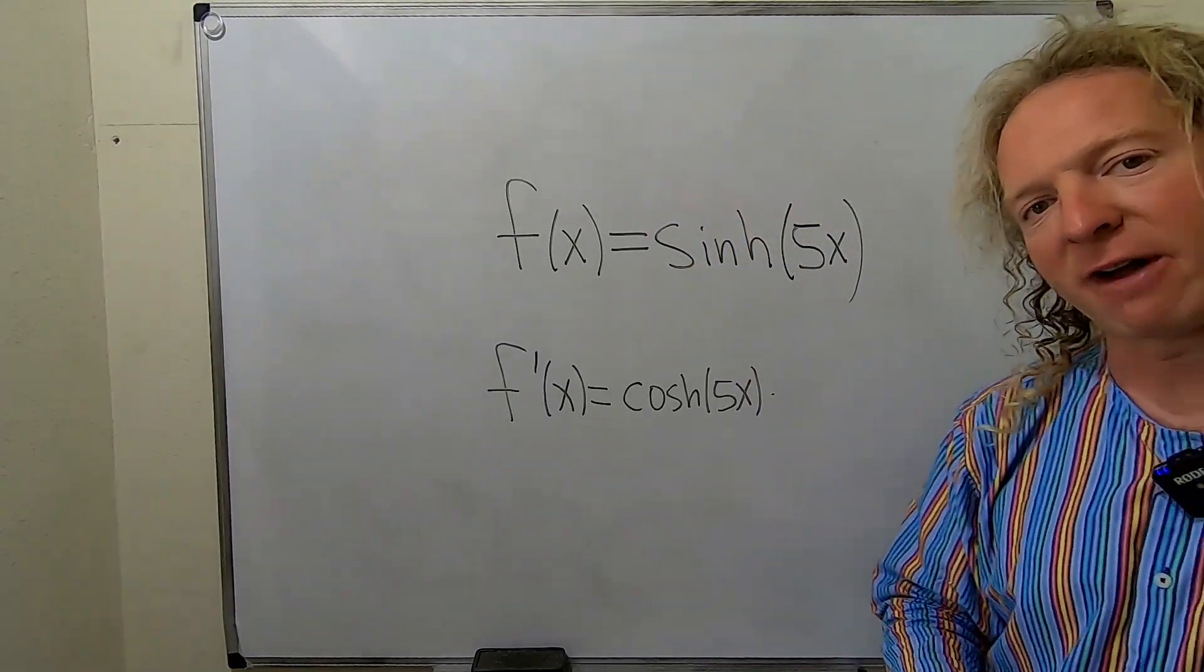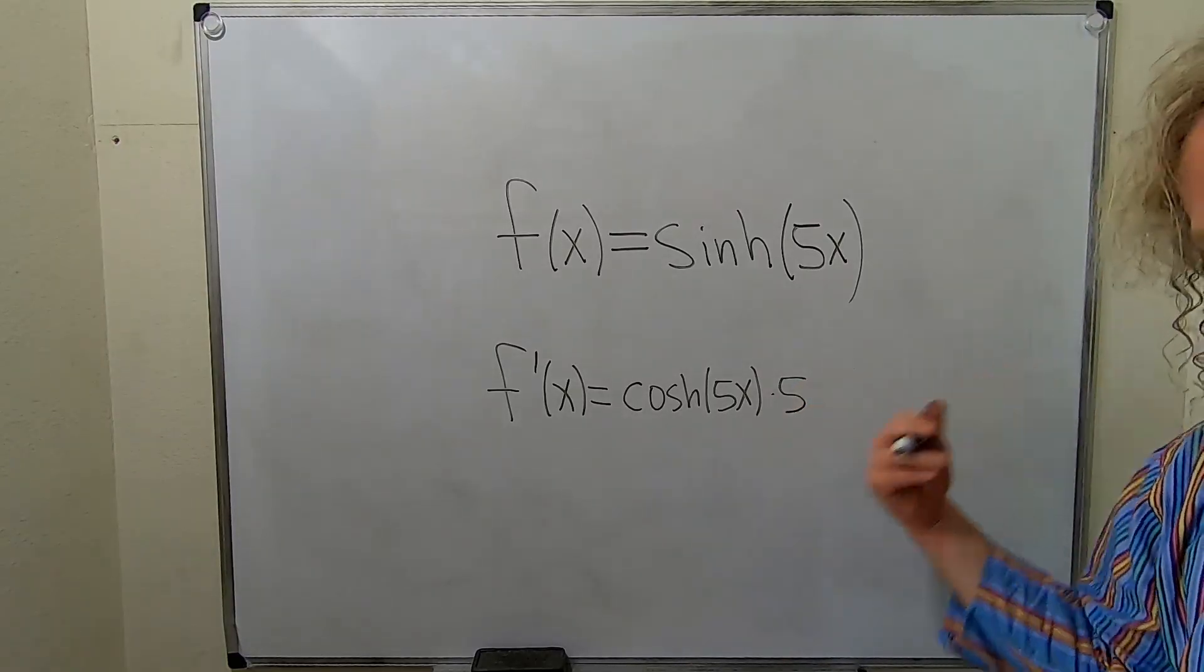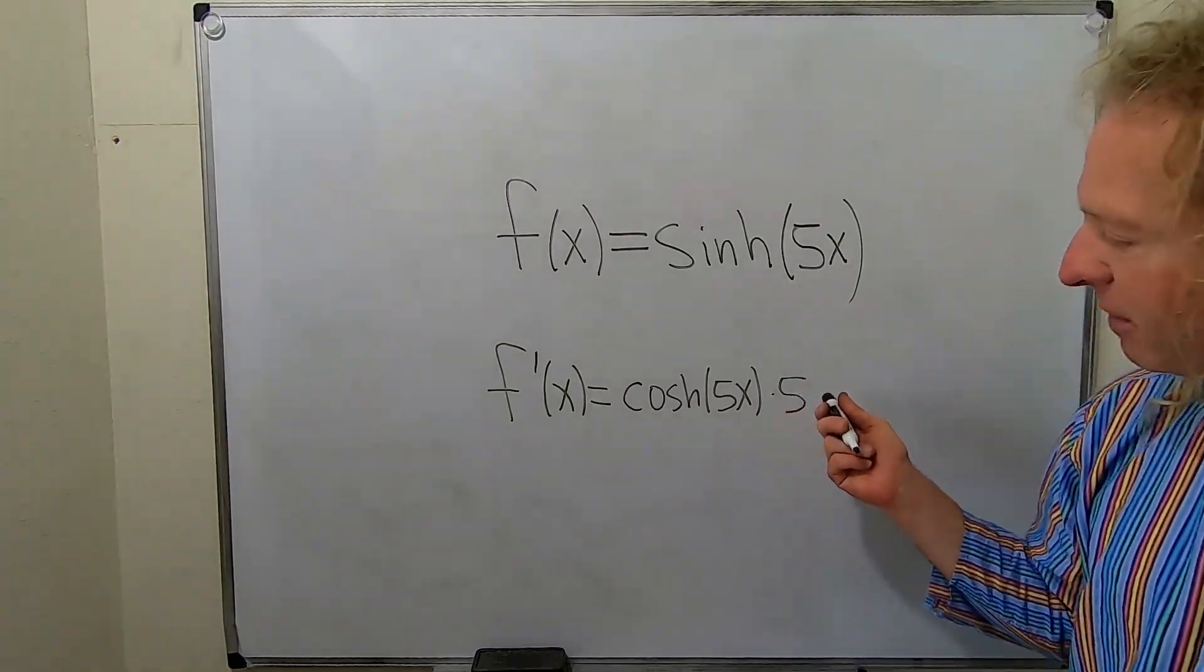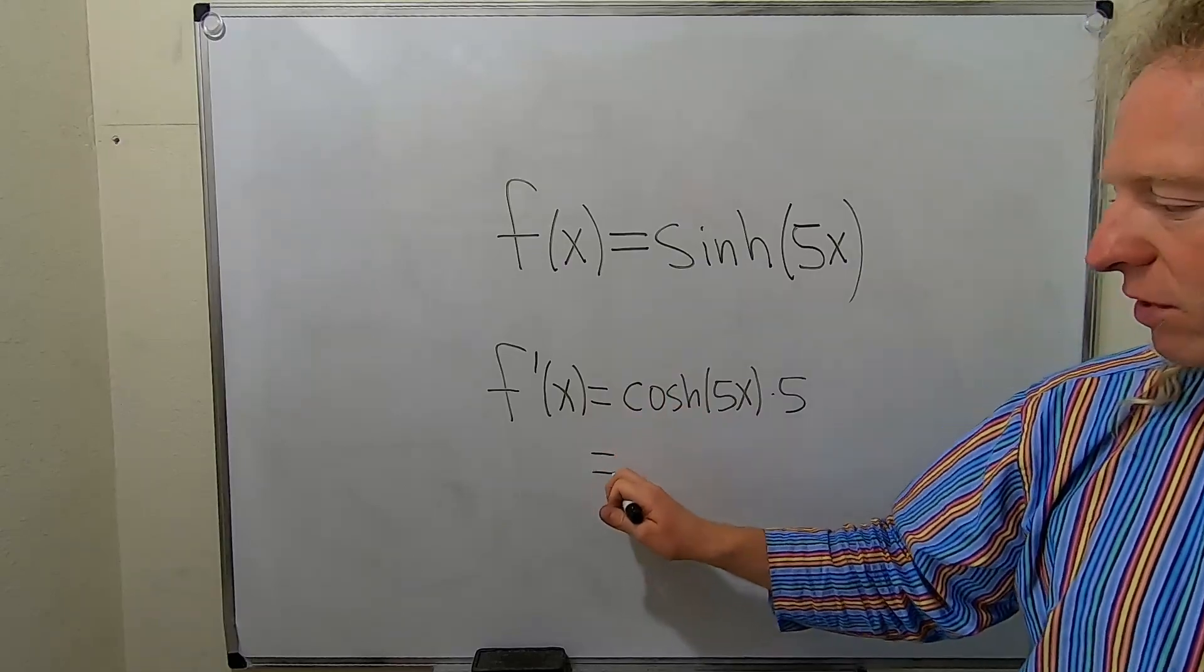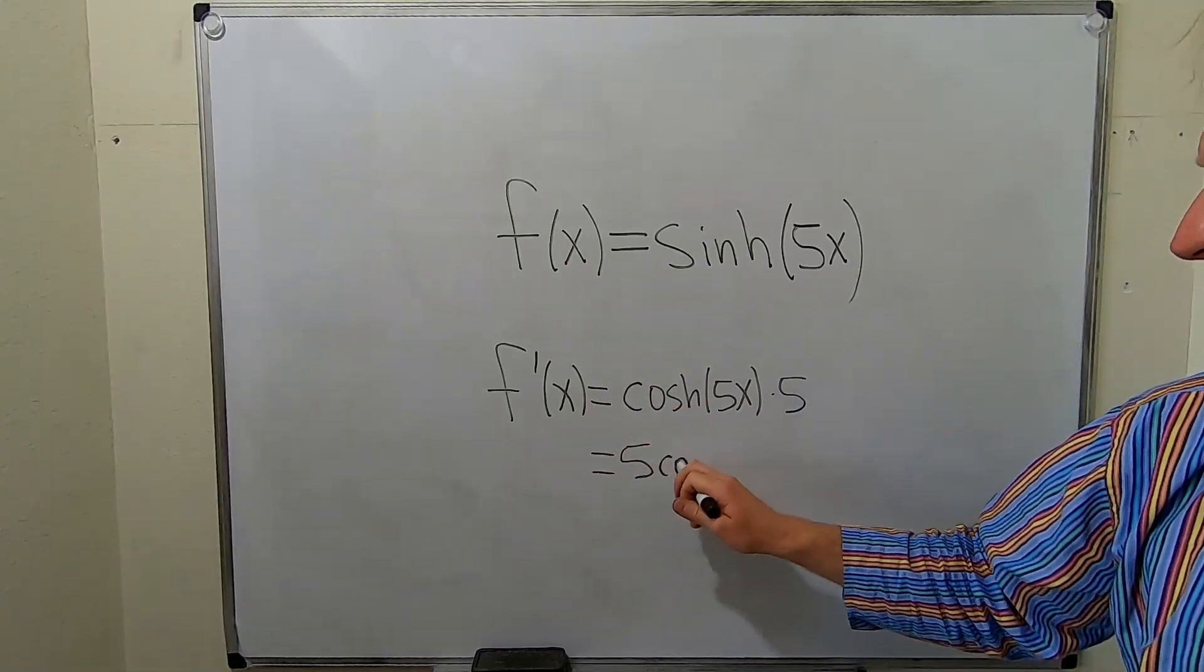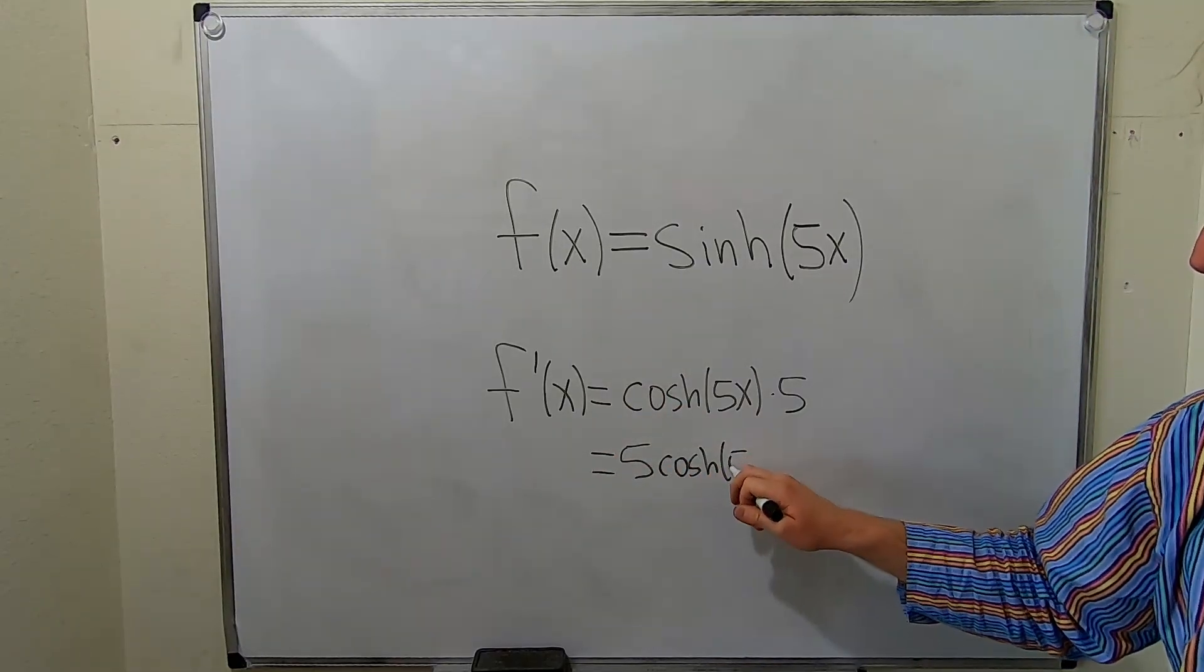Well, the derivative of 5x is just 5. And that's it. The last thing we want to do is put the 5 in the front. So this will be 5 cosh of 5x.